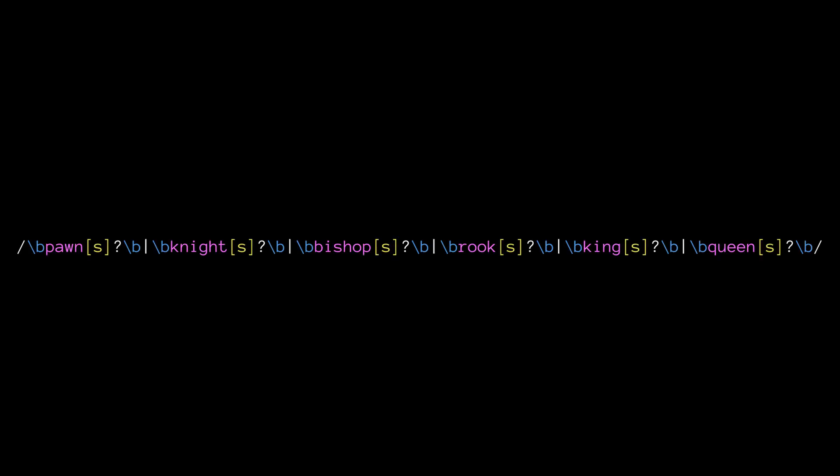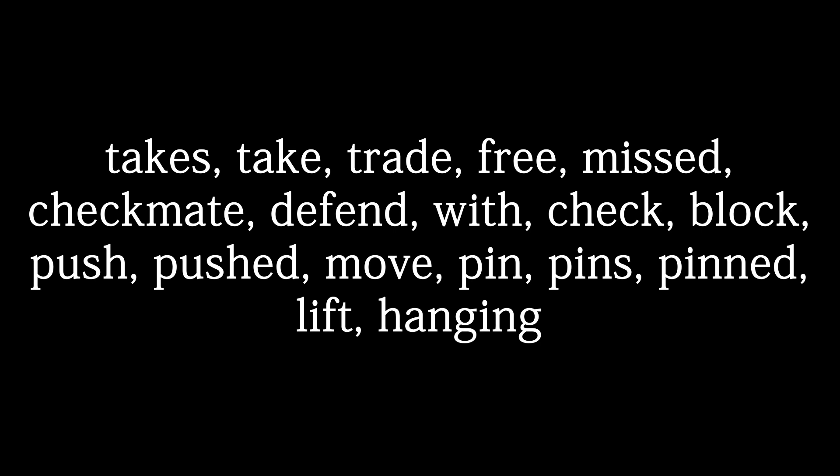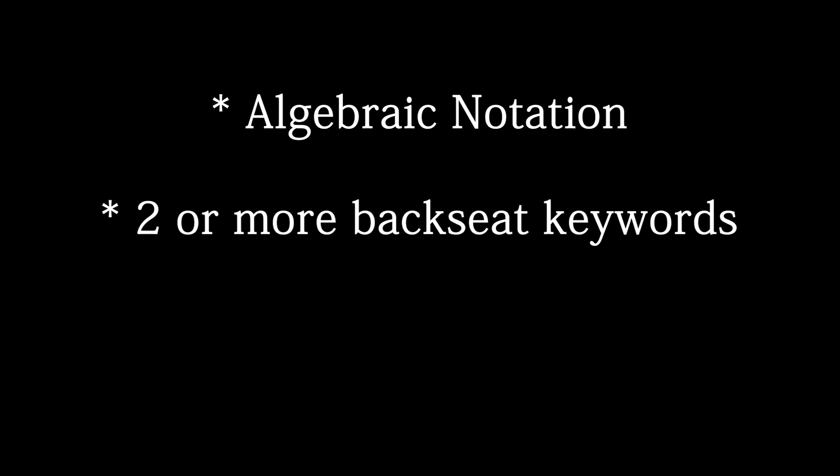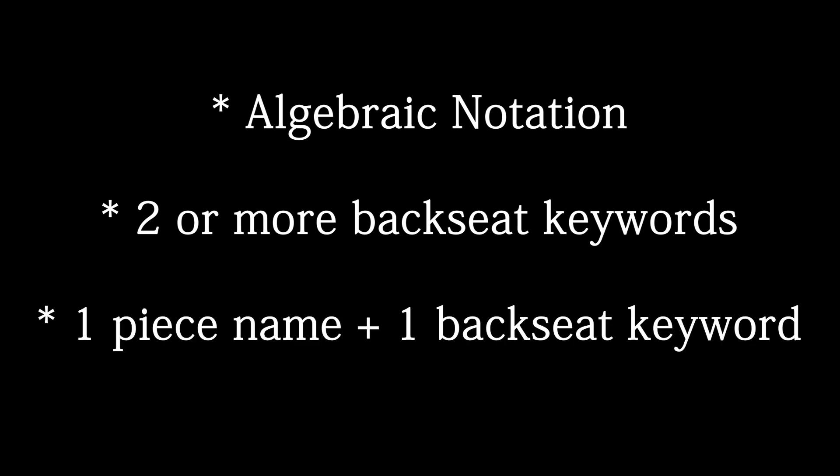So now that we can detect a traditional chess move in chat, we can work on actually stopping backseaters — but unfortunately the average chess backseater isn't actually smart enough to understand algebraic notation. So I've added two other regular expressions: one that detects piece names and their plural component, and another that detects common backseat keywords. I've arbitrarily decided that any message containing algebraic notation, two or more backseat keyword matches, or one piece name and one backseat keyword is a backseating message.